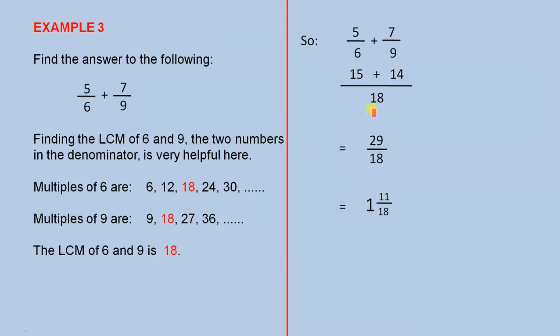So basically, here's our common denominator which helps us to work out that 5 over 6 is the same as 15 over 18 and 7 over 9 is the same as 14 over 18.